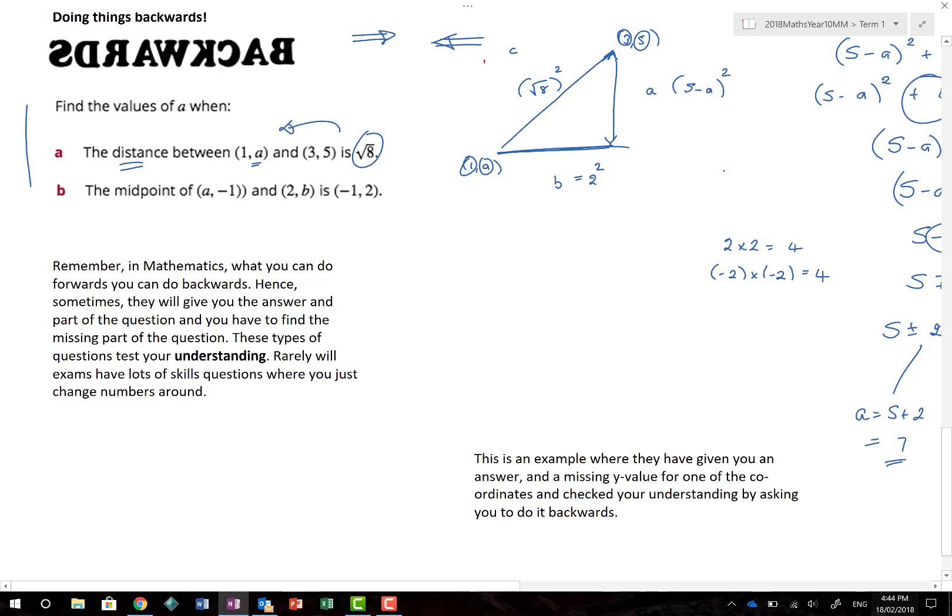This one here, the midpoint, is awesome. What do we know about A plus 2? Well, if I do A plus 2 and divide it by 2, it gives me minus 1. Why? Because, add the two A's together and divide it by 2 will give you the midpoint X. And if I take minus 1 and add it to B and divide that by 2, I get 2. There are two separate calculations. You can work out the value of A and B from there as well.